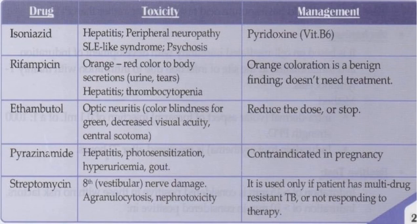Pyrazinamide is contraindicated in pregnancy. It causes photosensitization, hyperuricemia, and gout. Streptomycin involves the eighth cranial nerve (vestibular nerve), making it an ototoxic drug. Agranulocytosis and nephrotoxicity also occur. It is used only if the patient has multi-drug resistant TB or is not responding to therapy, and should also be avoided in pregnancy.